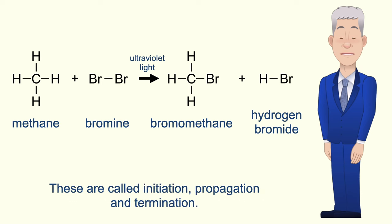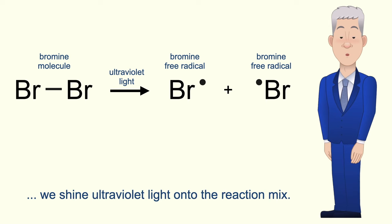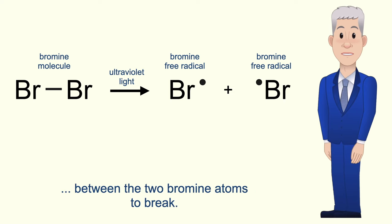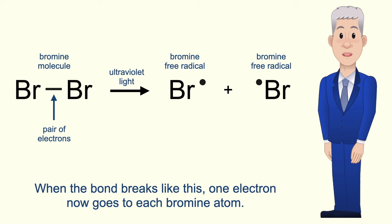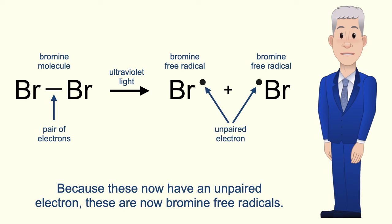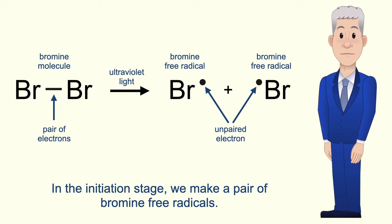There are three stages in this reaction. These are called initiation, propagation, and termination. At the start of the reaction we've got a mixture of methane and bromine molecules, Br2. In the first stage, which is called initiation, we shine ultraviolet light onto the reaction mix. The energy of ultraviolet light causes the single covalent bond between the two bromine atoms to break. You need to remember that a single covalent bond consists of a pair of electrons. When the bond breaks like this, one electron now goes to each bromine atom. Because these now have an unpaired electron, these are now bromine free radicals. When a covalent bond splits in this way, scientists call this homolytic fission.